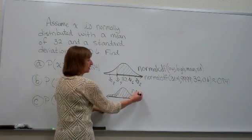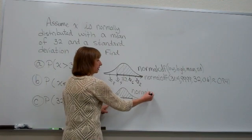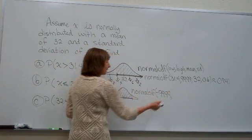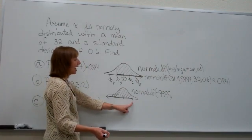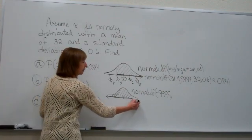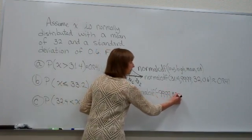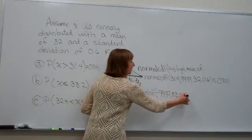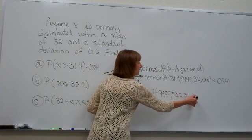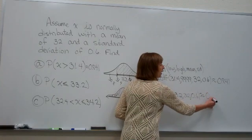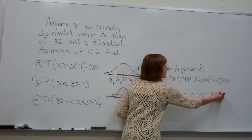And now we see that when we key this into normal CDF, our low is negative 999, comma, our high is the 33.2. Our mean is 32, and our standard deviation is 0.6, and we get a probability of about 0.977.